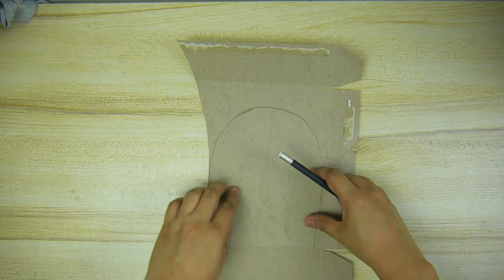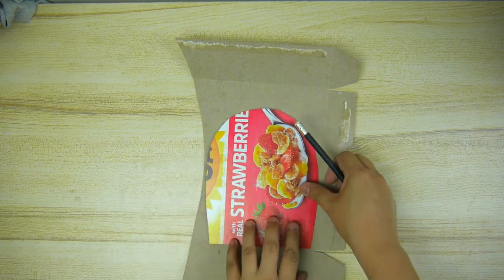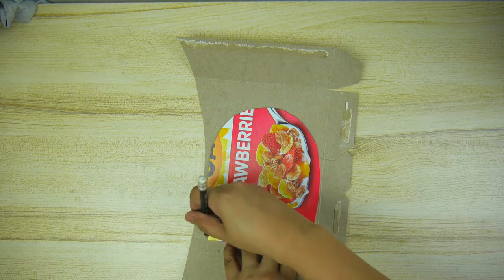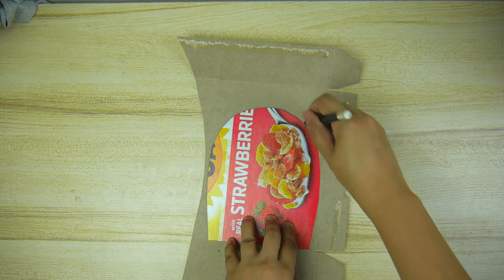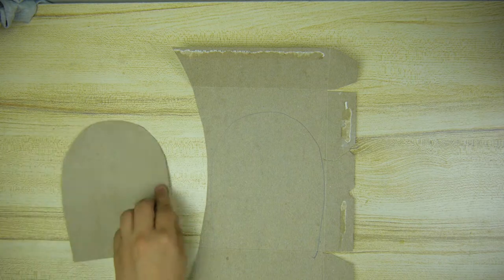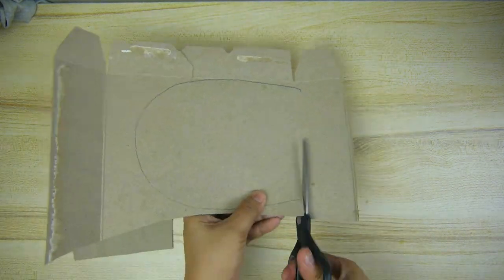Trace the shape so that you have the exact same shape as the other one. Then cut out again.